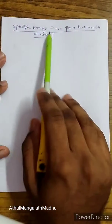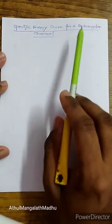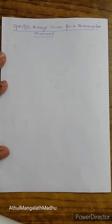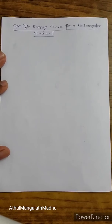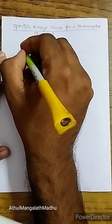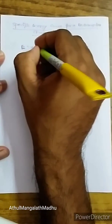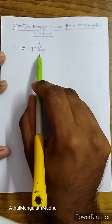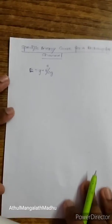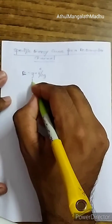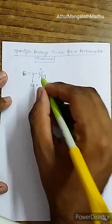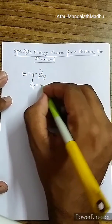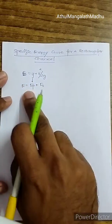We have already seen what is meant by specific energy. Now we will be deriving specific energy for a rectangular channel. We have derived the equation: specific energy E is equal to y plus v² by 2g, where y is the pressure head and v²/2g is the velocity head. This represents potential energy EP plus kinetic energy EK, so total energy E = EP + EK.